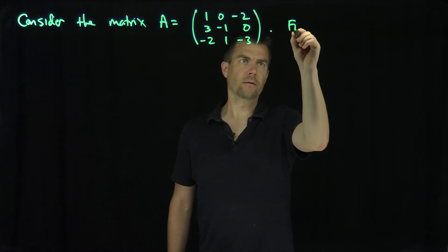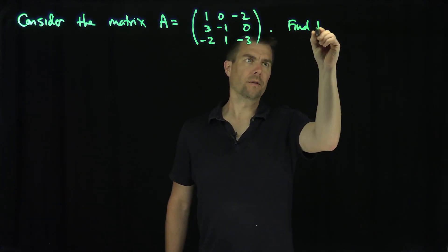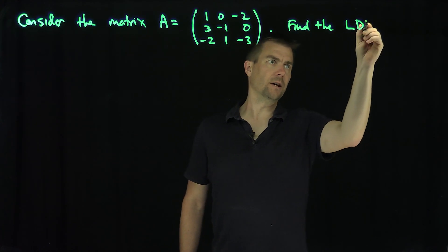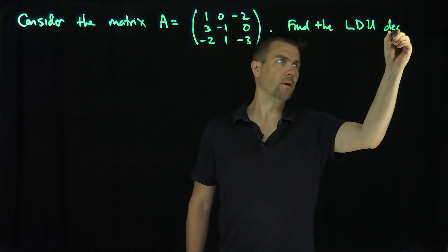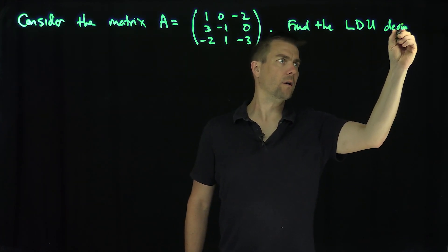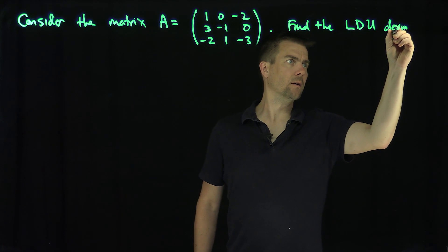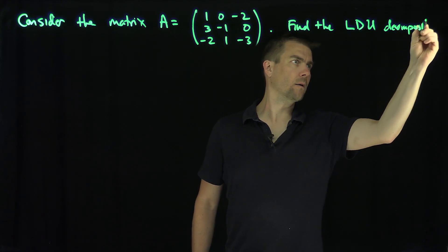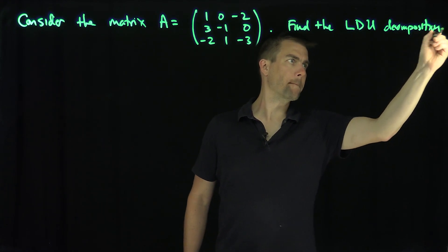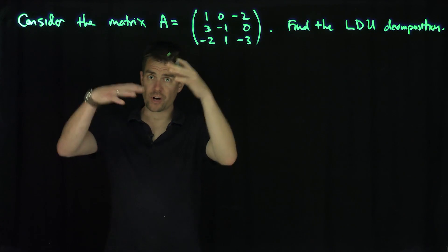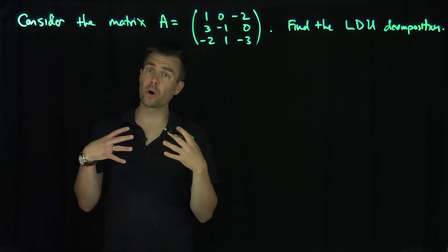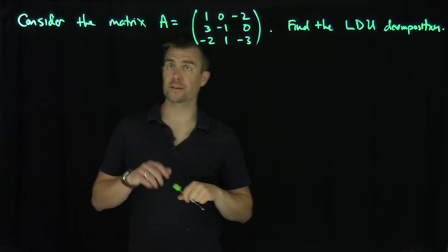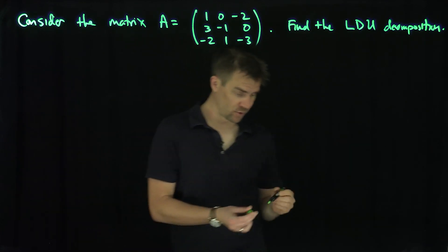Let's find the LDU decomposition. We're going to do Gaussian elimination on A and store all of our elementary row operations on the left-hand side. So let's do it.